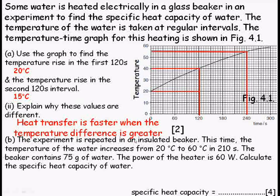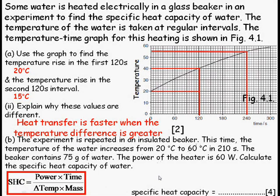Right. The experiment is repeated in an insulated beaker. This time, the temperature of the water is increased from 20 degrees Celsius to 60 degrees Celsius in 210 seconds. The beaker contains 75 grams of water. The power of the heater is known. 60 watts calculates specific heat capacity of water. This is very similar to the previous questions we've just been through. So, it's worth four marks. This is where all the good stuff is. So, you want to take your time with it carefully. Write down the formulas you need.